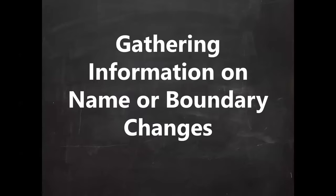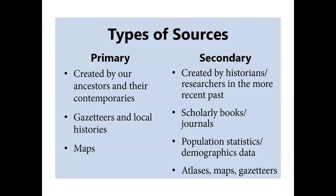Moving along, I'm going to cover some sources for gathering information on name or boundary changes. I've divided this into two subsections: primary sources — those created by our ancestors and their contemporaries, including historic gazetteers, local histories, and maps — and secondary sources, created by historians or researchers more recently, such as scholarly books, journals, collections of population statistics and demographics data, or more recent atlases, maps, and gazetteers.